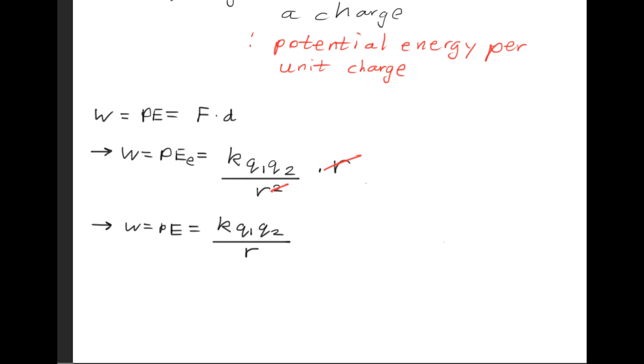But we said that the voltage is the potential energy per unit charge. So what we have to do now is we'll divide by q and we can do that by multiplying by one over q. That gives us the voltage and one of the q's is going to cancel out and we'll get kq over r for the voltage.